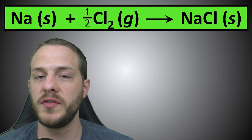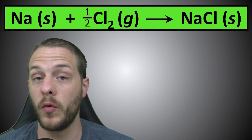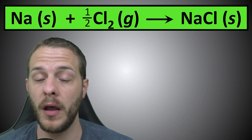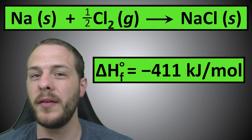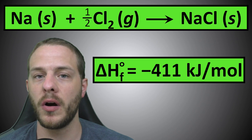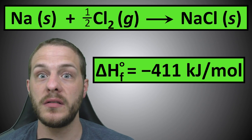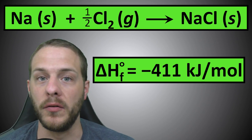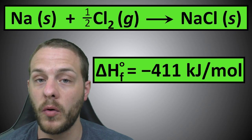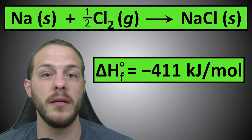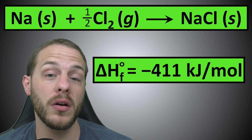For instance, consider the formation of sodium chloride crystals. When one mole of crystalline sodium chloride is formed from elemental sodium and chlorine, 411 kilojoules are released into the surroundings. In other words, the standard enthalpy of formation of solid sodium chloride is negative 411 kilojoules per mole.